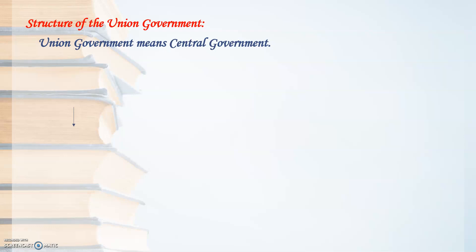State government means all the states in India have different governments. For example, the state government of Maharashtra, state government of Goa, state government of Kerala — those are called as the state government. So union government, or central government, is the government that functions for the entire country of India.